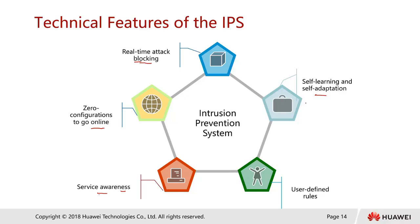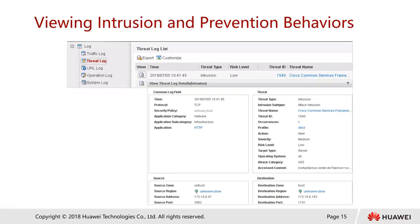Another feature is self-learning and self-adaptation. A good IPS can learn the pattern of user behavior. For example, if a company constantly uses Google Drive or Gmail, that is the norm. But if accessing external websites is prohibited in another company, we can train the IPS to recognize what is good and what is bad, and also define custom rules.